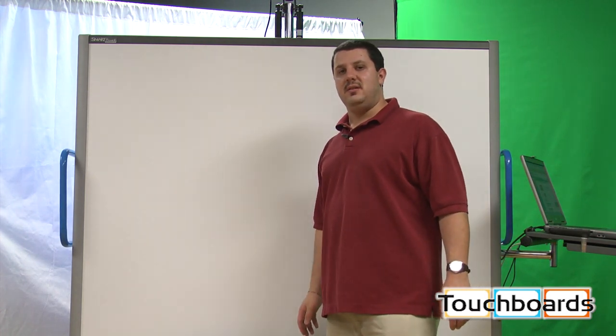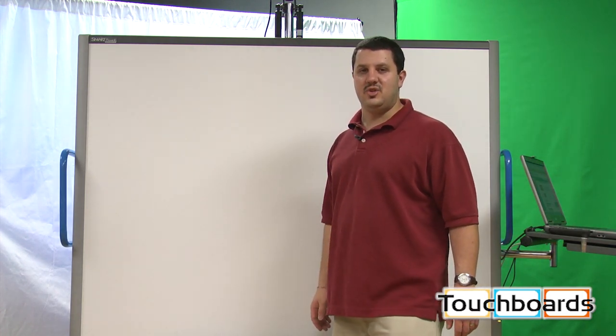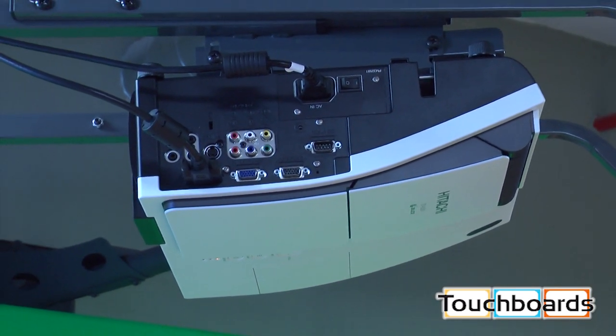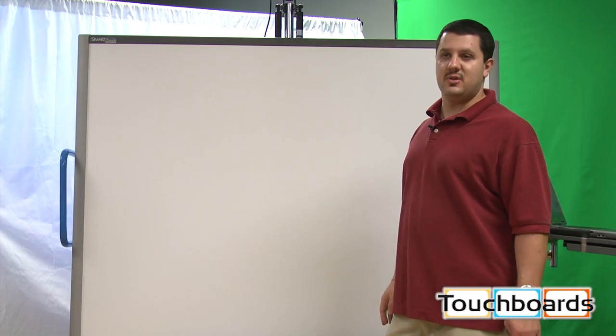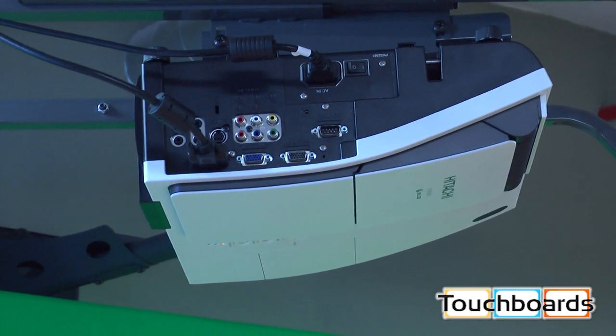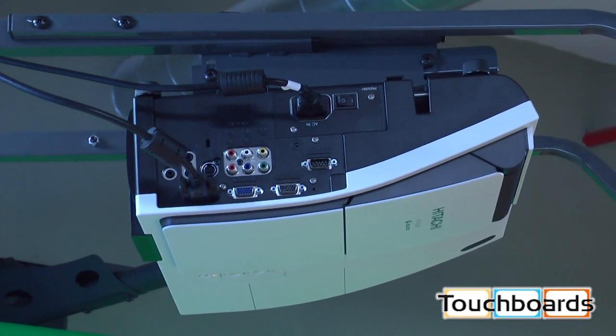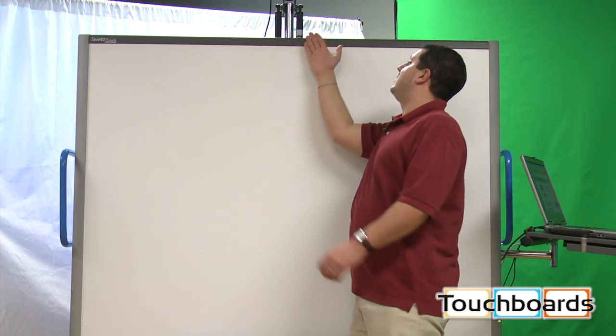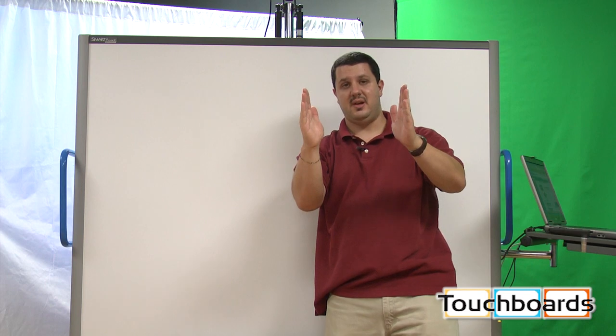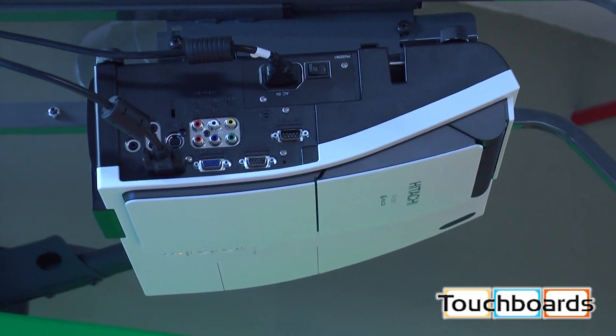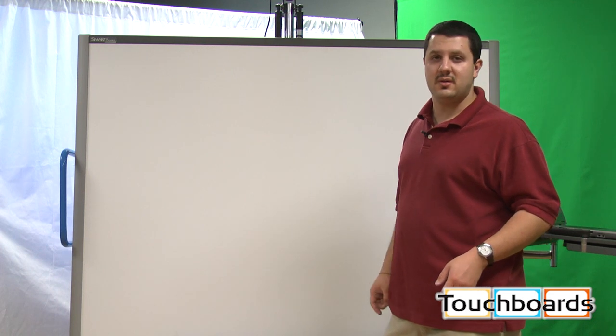Here we want to show you the new Hitachi CP-A200 ultra short throw projector mounted right above me here. It's their 3000 lumen model, it's brand new. We have it here on an iRover stand with a smart board. It's above the board and very close to the board. This much space between the front of the board and the projector. It's very close, it's going to put a real nice image on here and I just want to show you a little bit how it works.